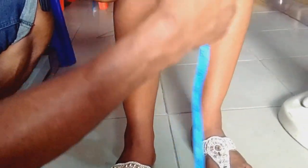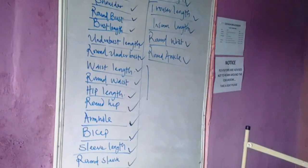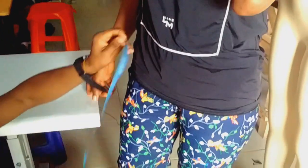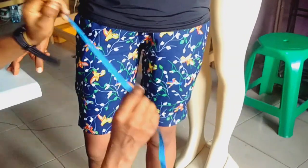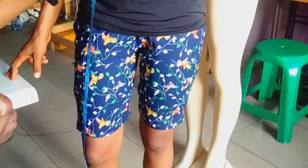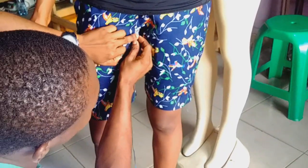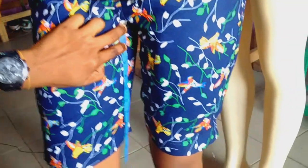We still have the inseam length. To measure inseam length: remember that trouser length is from the waist down to the ankle. The inseam length, however, is from the crotch point — that crotch point right there — down to the ankle. That is how you get your inseam length.